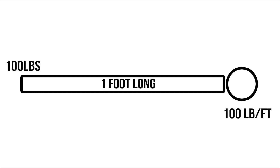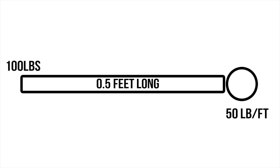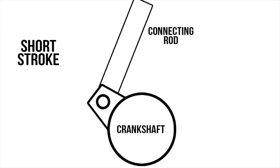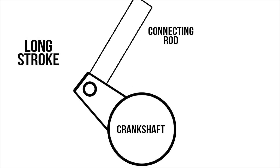The easiest way to visualize torque is if you had a one-foot wrench on a nut and you put 100 pounds on the end of that wrench — that would be 100 foot-pounds of torque. If you increase the wrench to two feet, you'd have 200 foot-pounds; decrease it to half a foot and you'd have 50 foot-pounds. With this visual, it's easy to see how increasing stroke increases torque — you're moving the point where the piston pushes down further from the center of the crankshaft, effectively lengthening that wrench.